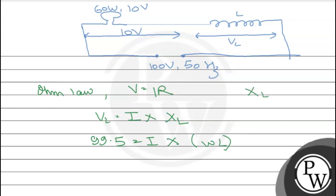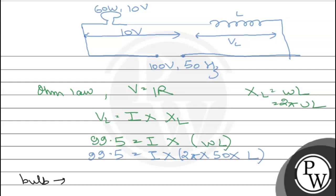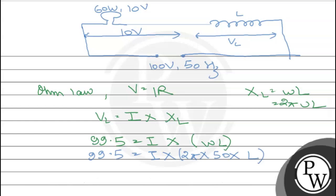Where ω is the angular frequency, जिसको हम 2πf लिख सकते हैं। Frequency हमें दे रखी है 50 Hz। That means: 99.5 = I × 2π × 50 × L. अब हम current निकाल सकते हैं — क्योंकि bulb और inductance दोनों series में हैं, so current same होता है। जितना current bulb से pass करेगा उतना ही inductance से pass करेगा।